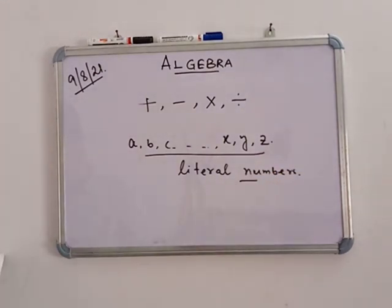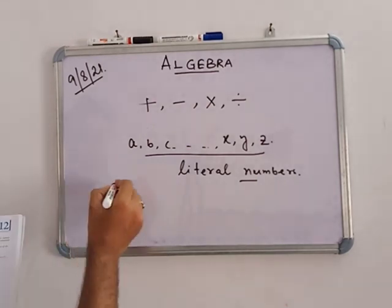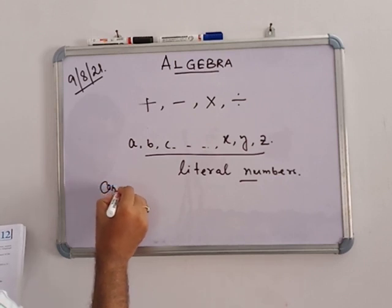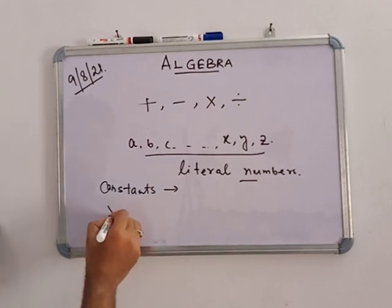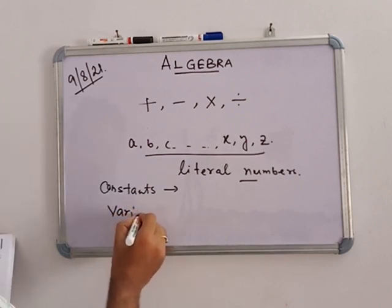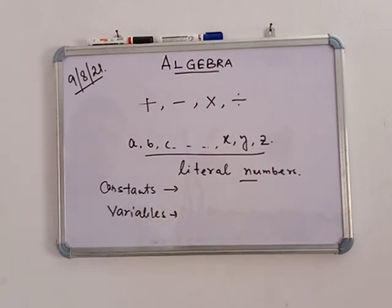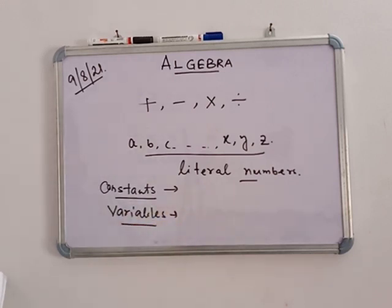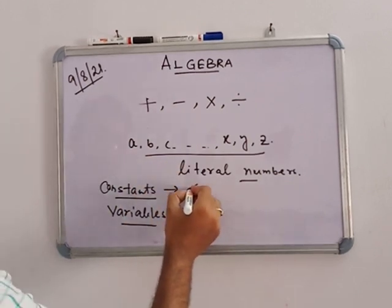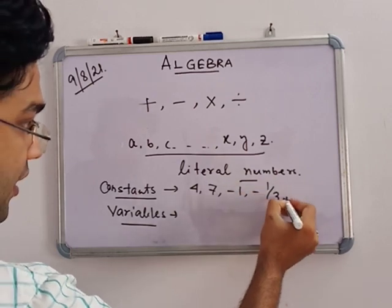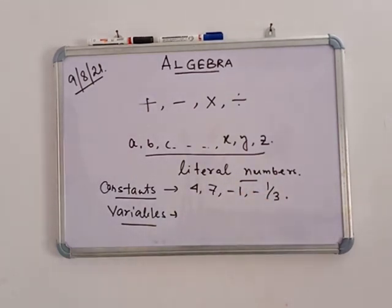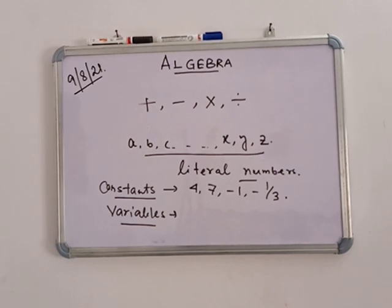Now, two types of literal numbers are there: constants and variables. What are constants? Constants means when a number has a fixed value. For example, 4, 7, minus 1, minus 1 by 3 — these are constant values because the values are fixed.